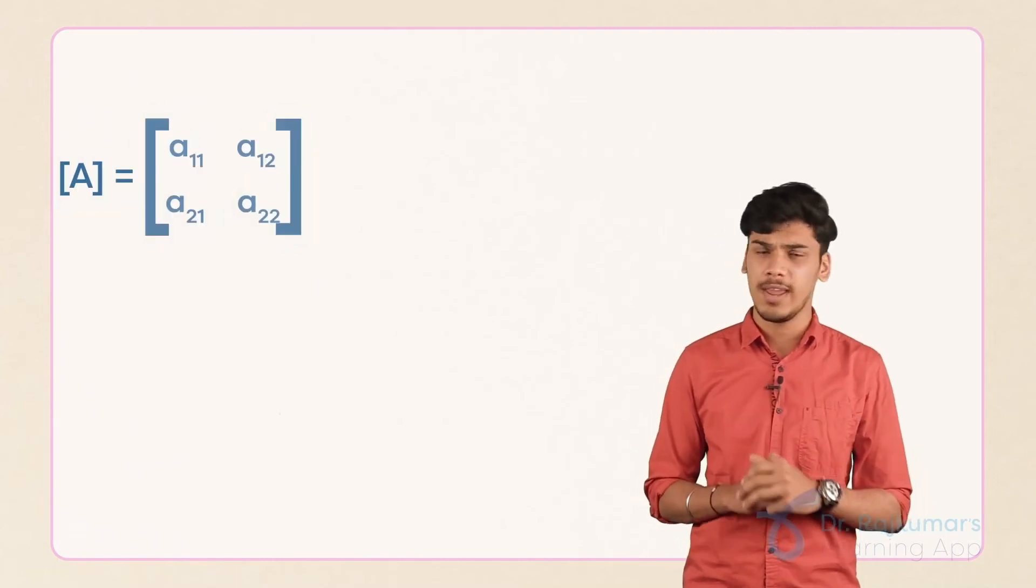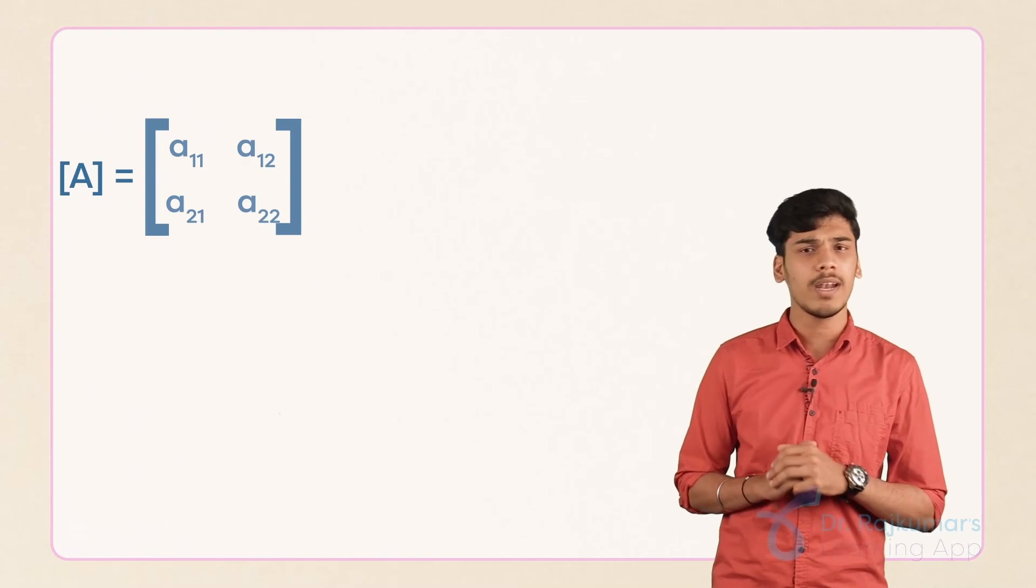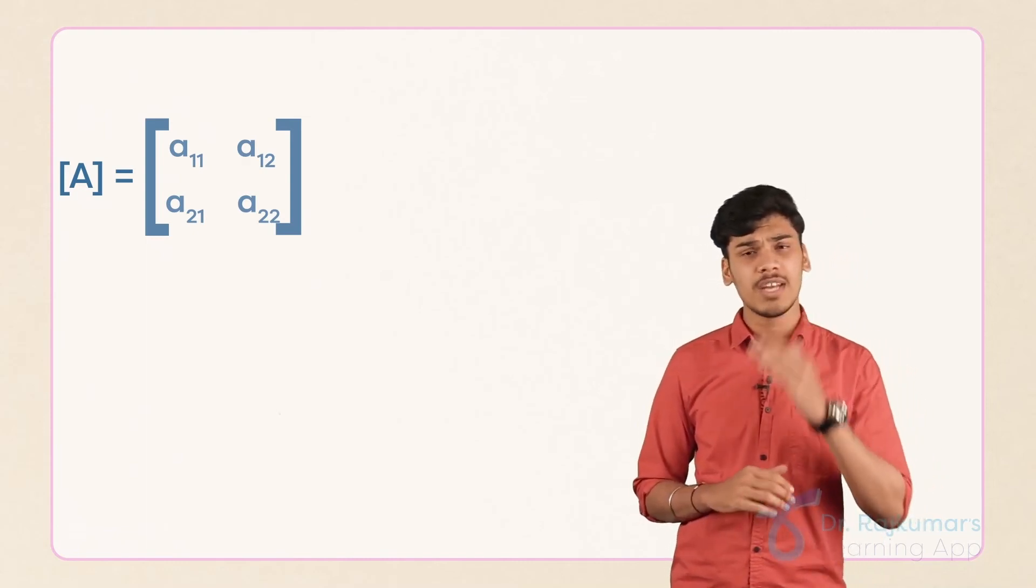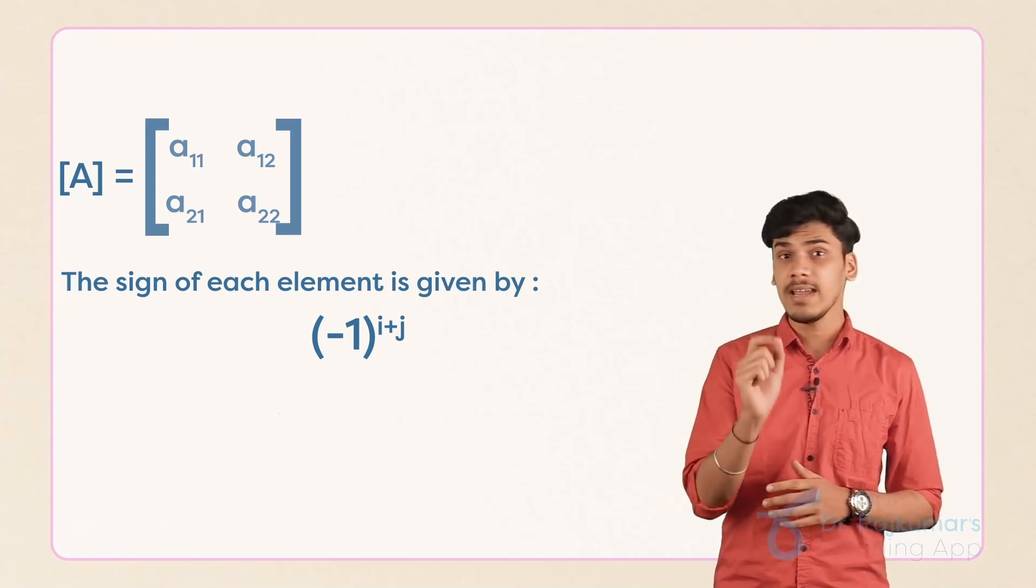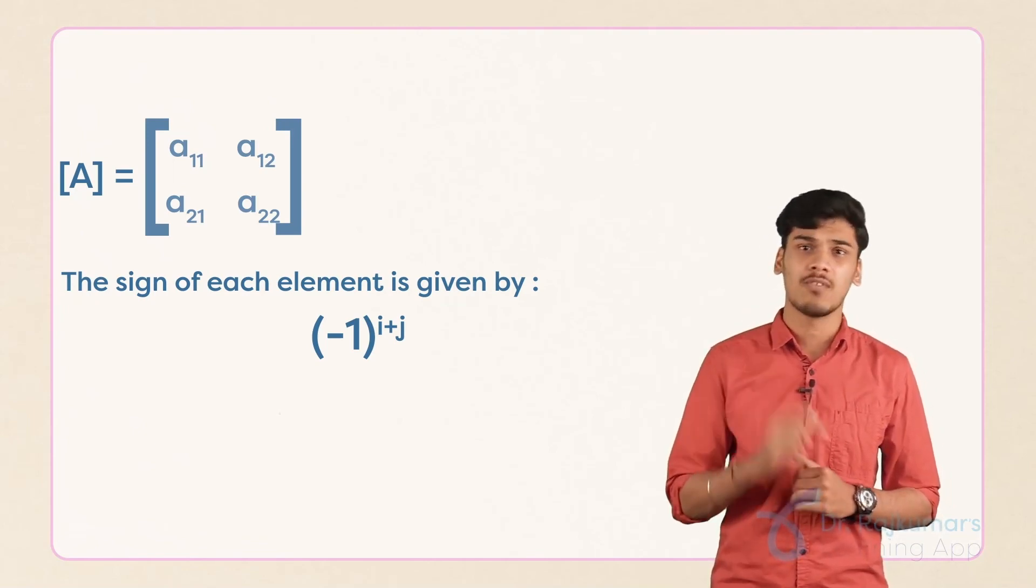So over here, I have a matrix A is equal to A11, A12, A21, A22. The sign of each and every element is given as minus 1 power i plus j, meaning the sign mainly depends upon the position of the given element.